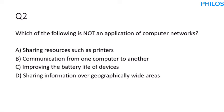Question two: Which of the following is not an application of computer networks? The one which is not an application is option C: improving the battery life of devices. You can use networks to share resources (option A), communication from one computer to another, and sharing information over geographically wide areas — except option C.